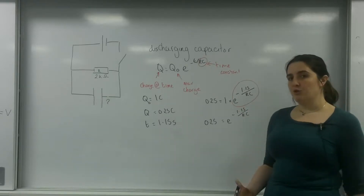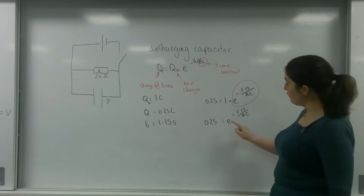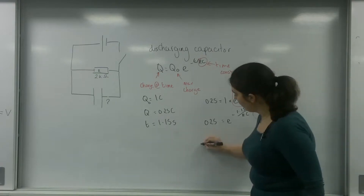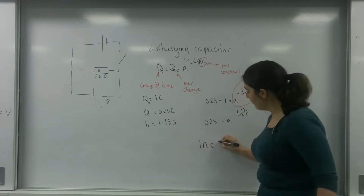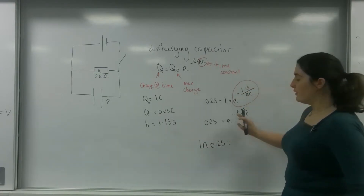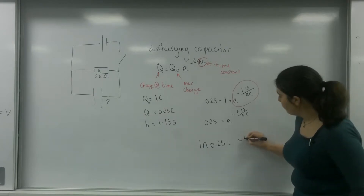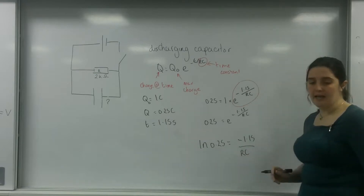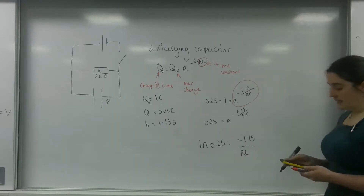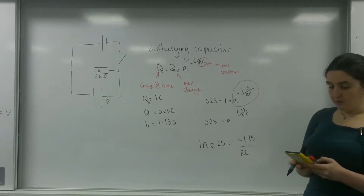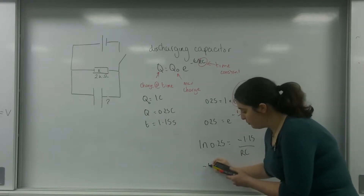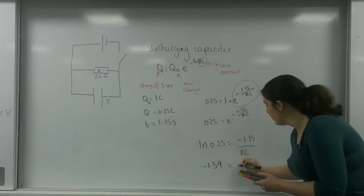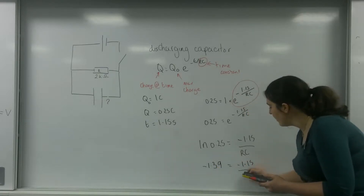Now I'm going to take the natural log of both sides. By natural logging both sides, I remove the E and am left with just the power. So ln(0.25) equals minus 1.15 over RC. Putting this in, ln(0.25) equals minus 1.39, so minus 1.39 equals minus 1.15 over RC.